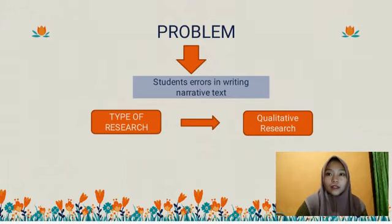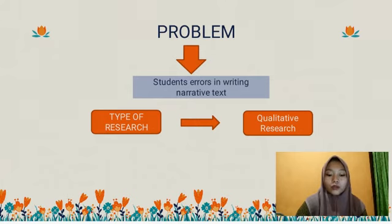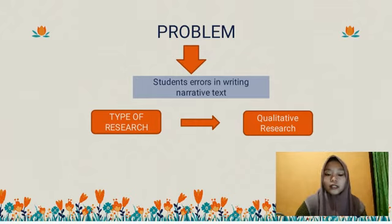For the first one is the problem — that is the problem that students make in writing narrative text. So the problem is the student's error in writing narrative text. For the type of research, this research includes qualitative research, because I want to know what the types of student's errors are made when writing narrative text. This research needs some data and qualitative research can help to explore more information related to the errors that students made.